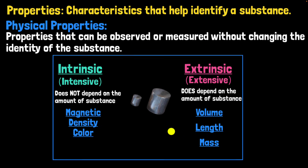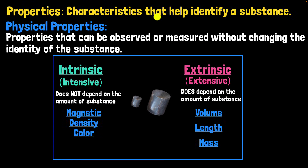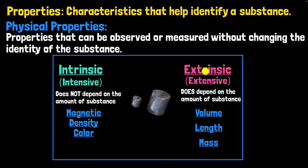Putting it all together: properties help us identify a substance. There are two kinds — physical and chemical. Physical properties are the ones that can be observed or measured without changing the identity of the substance. Another way to classify properties is as intrinsic or intensive properties, which do not depend on the amount of substance, and extrinsic or extensive properties, which do depend on the amount of substance.